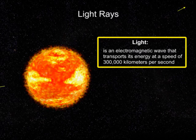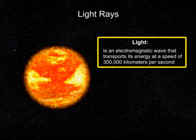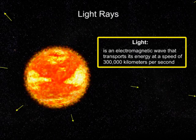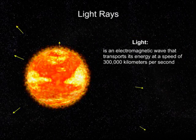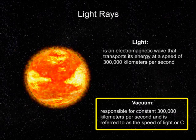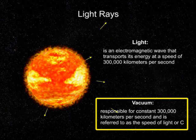Light is an electromagnetic wave that transports its energy at a speed of 300,000 kilometers per second. This constant speed is how fast light travels in a vacuum and is referred to as the speed of light, or C.